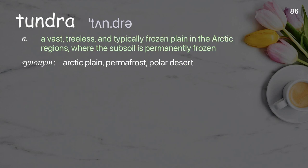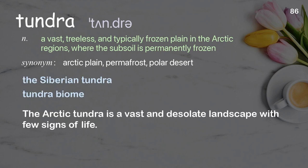Tundra. A vast, treeless, and typically frozen plain in the Arctic regions, where the subsoil is permanently frozen. Examples: the Siberian tundra; tundra biome. The Arctic tundra is a vast and desolate landscape with few signs of life.